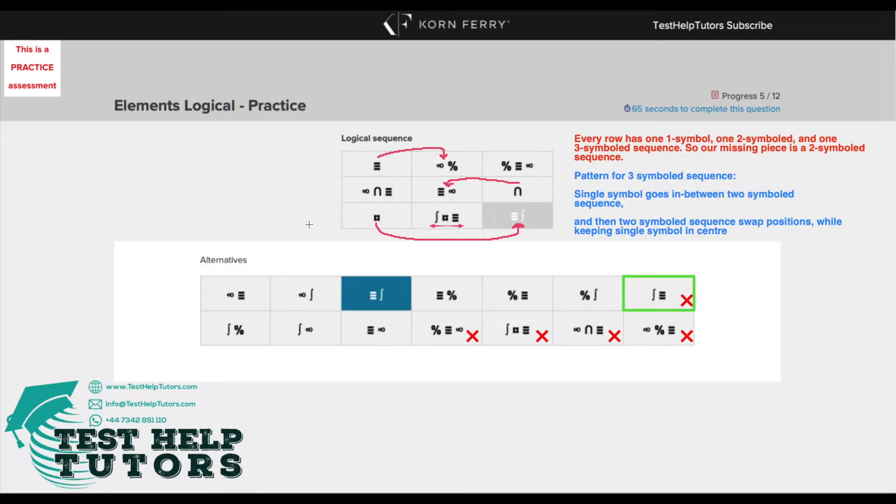In order for us to solve this problem, we'd have to look at our table in terms of rows. So this is the first row here, this is our second row and this is our third row. When we look at each row, we can see that we've got three different sequences. We have one that's one symboled, we have the second one which is two symboled and then we have a three symboled sequence here.